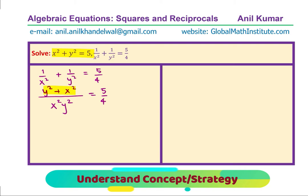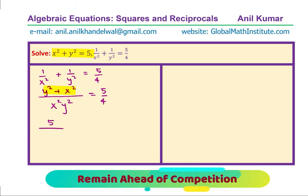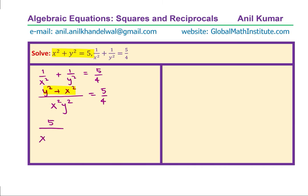The numerator y² + x² is given to us as equal to 5, so we can substitute this value. We get 5 / x²y² = 5/4. Since the numerators are the same, the denominators must be equal, and therefore x²y² = 4.